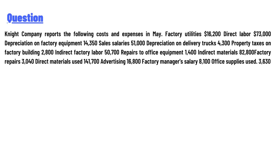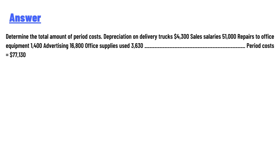Indirect materials $82,800; factory repair $3,040; direct materials used $41,700; advertising $16,800; factory manager salary $8,100; office supplies used $3,630. The question asks: determine the total amount of period costs.